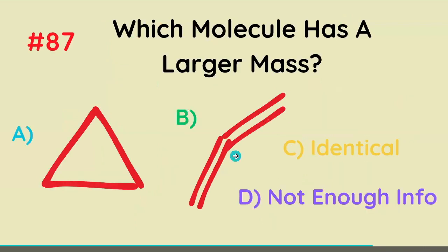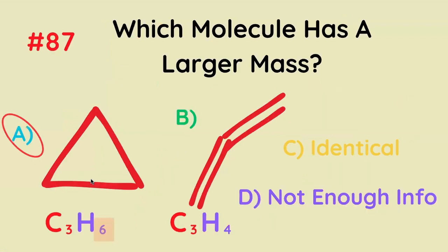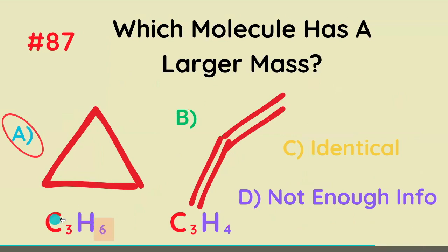Which molecule has a larger mass? It's going to be A. Drawing the Lewis structure gives CH₃, C₃H₆, and C₃H₄. Because A has the same number of carbons but more hydrogens, overall A is going to be larger.